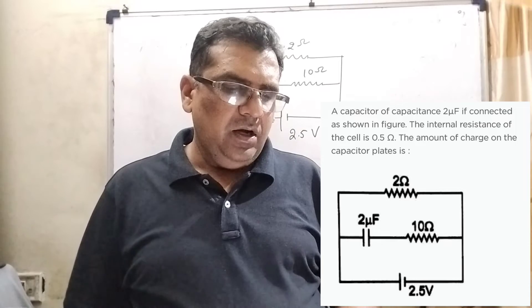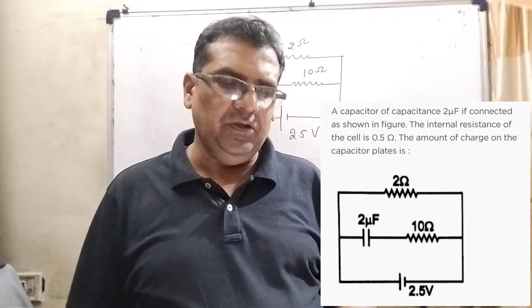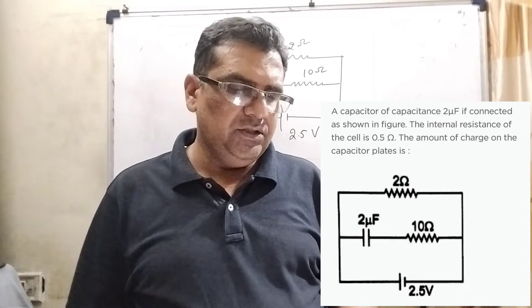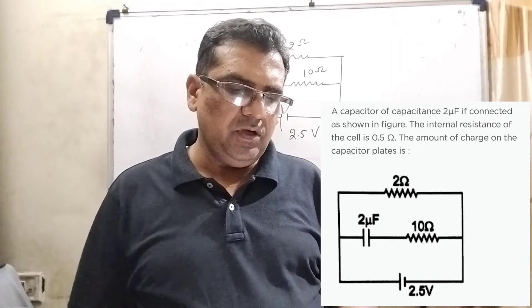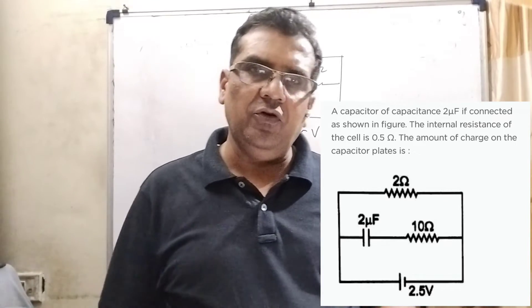Now here is the question. A capacitor of capacitance 2 microfarad is connected as shown in the figure. The internal resistance of the cell is 0.5 ohm. The amount of charge on the capacitor plates is... Here we have given four options.